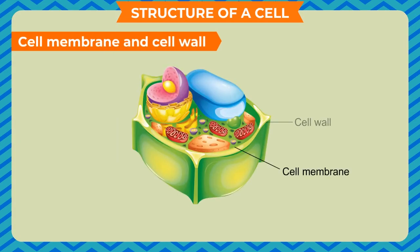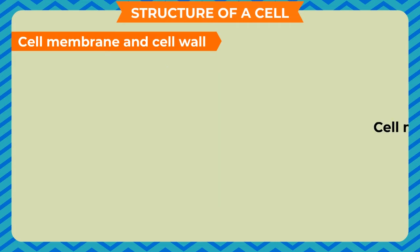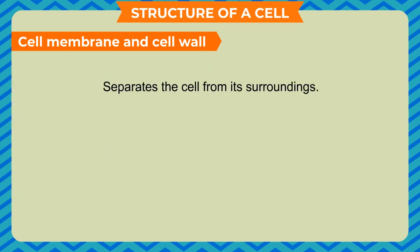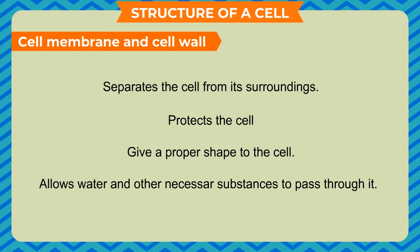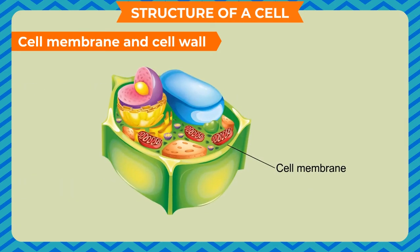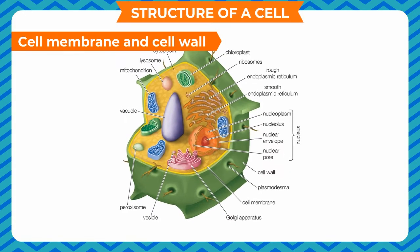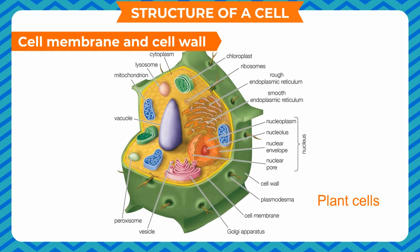The cytoplasm is surrounded by a thin membrane called the cell membrane or plasma membrane. The cell membrane performs basic functions: separates the cell from its surroundings, protects the cell, gives a proper shape to the cell, and allows water and other necessary substances to pass through it. Plant cells contain cell wall along with the cell membrane. This is to provide extra strength to the plant cells.